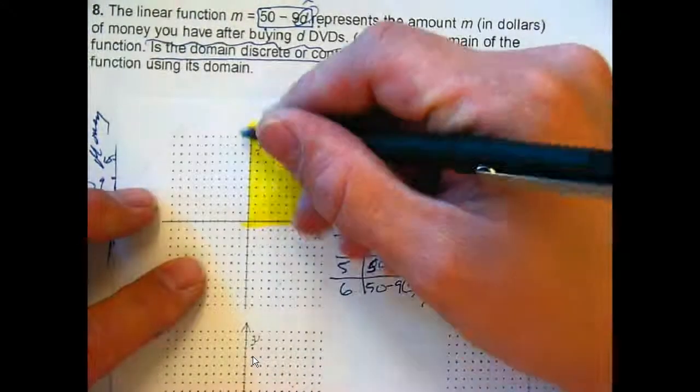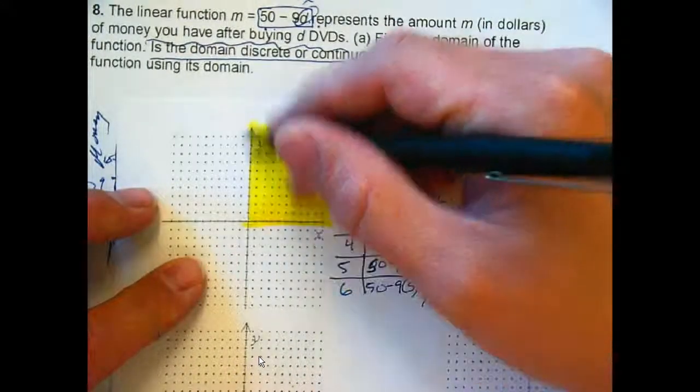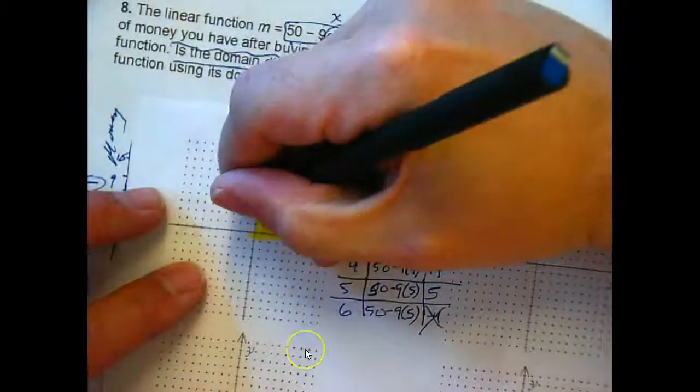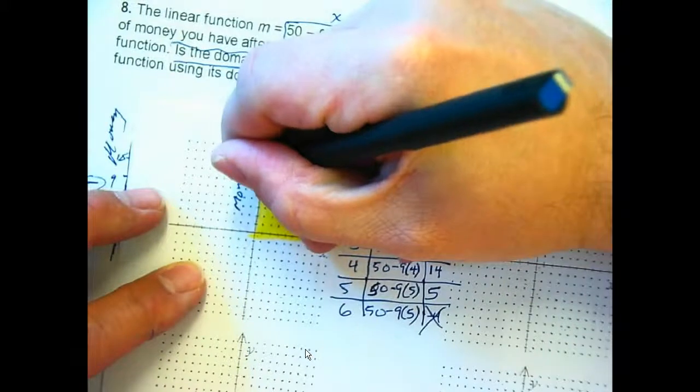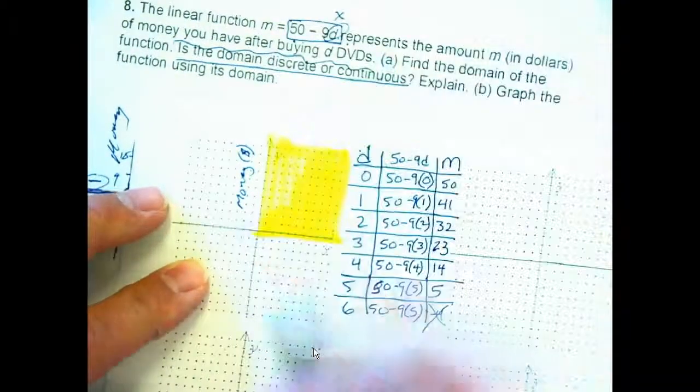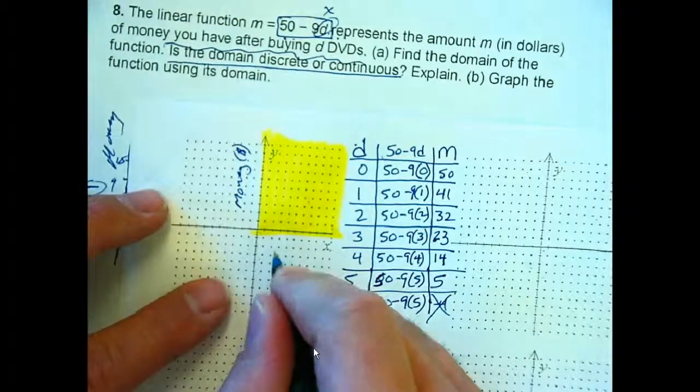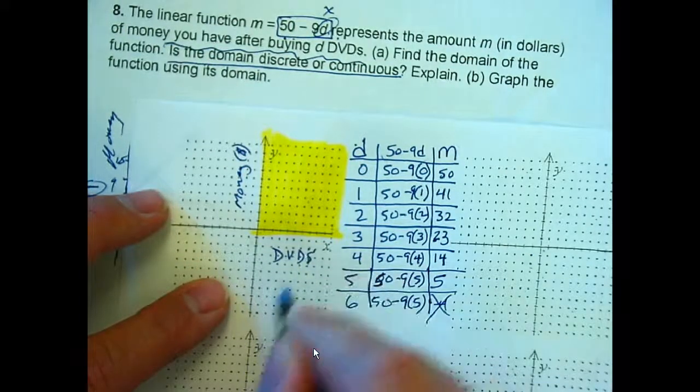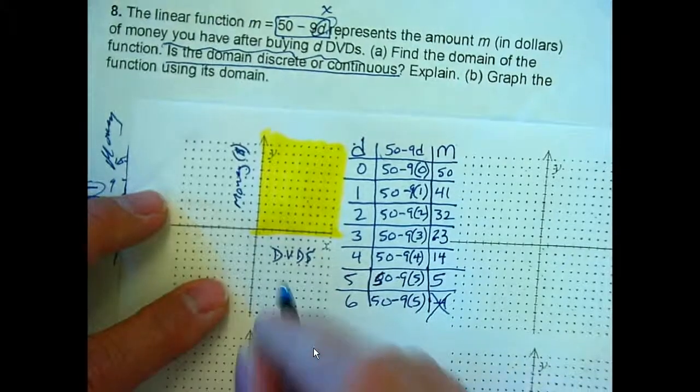Discrete data. Okay? And on the y axis, what's my label? Yeah, money. In dollars. Okay? And x axis, what's our label? DVDs.